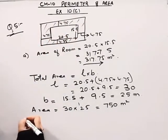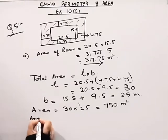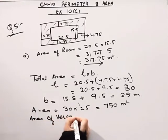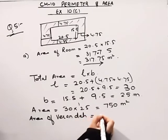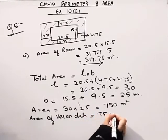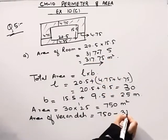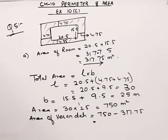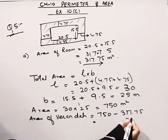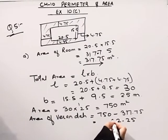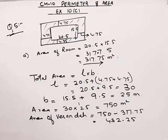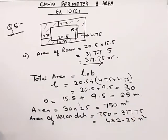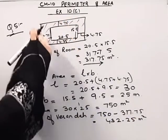So if we have to find out the area of the veranda, it will be the total area — which is 750 — minus the area of the room — which is 317.75. This comes out to be 432.25 meter square. This is the area of the veranda.